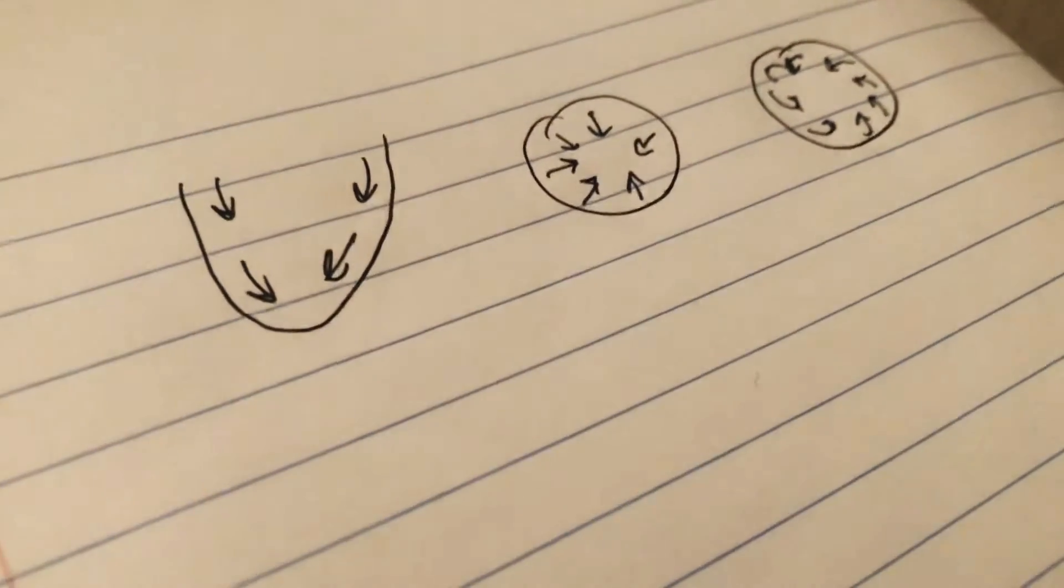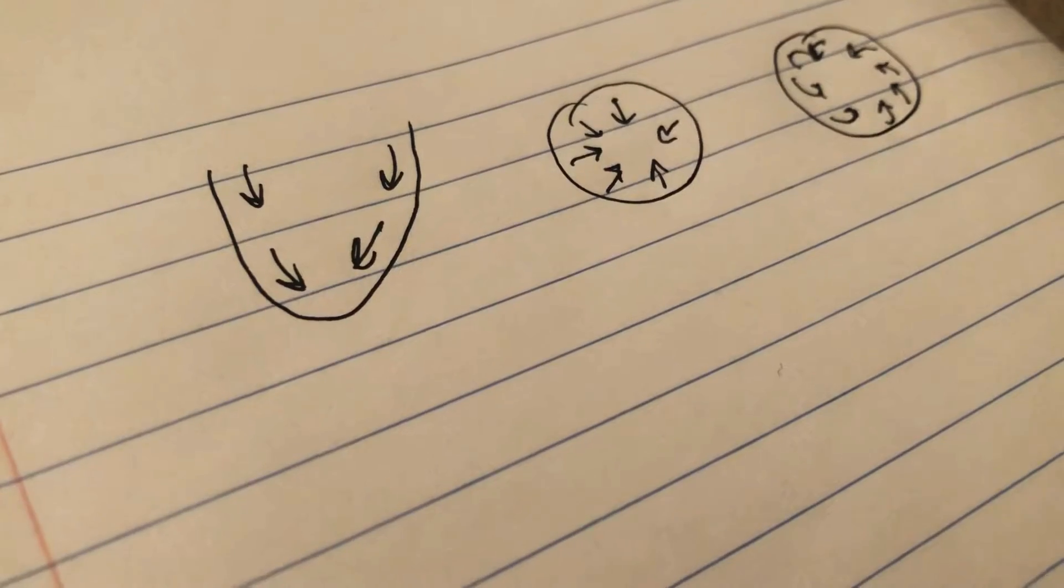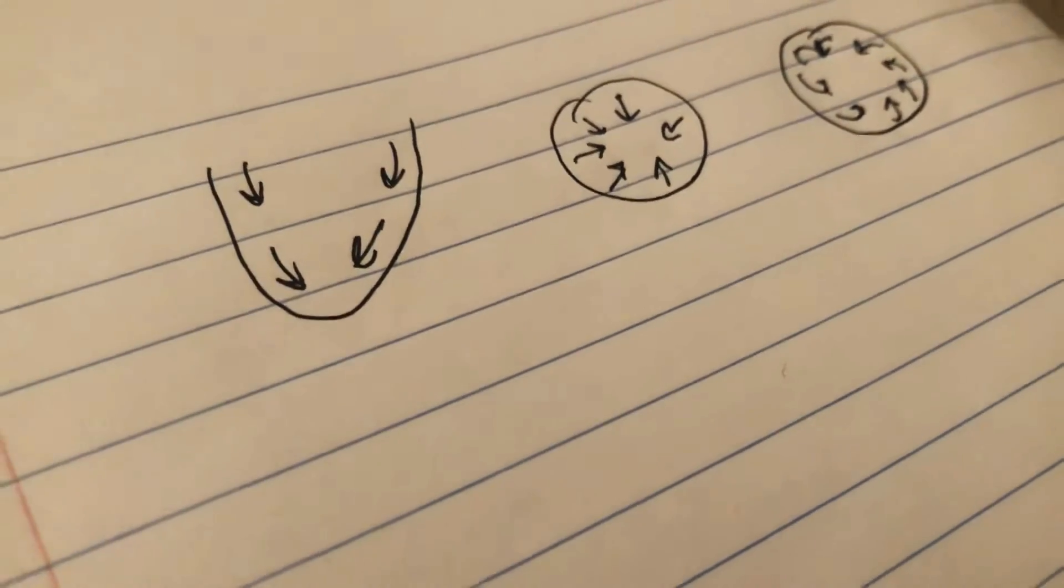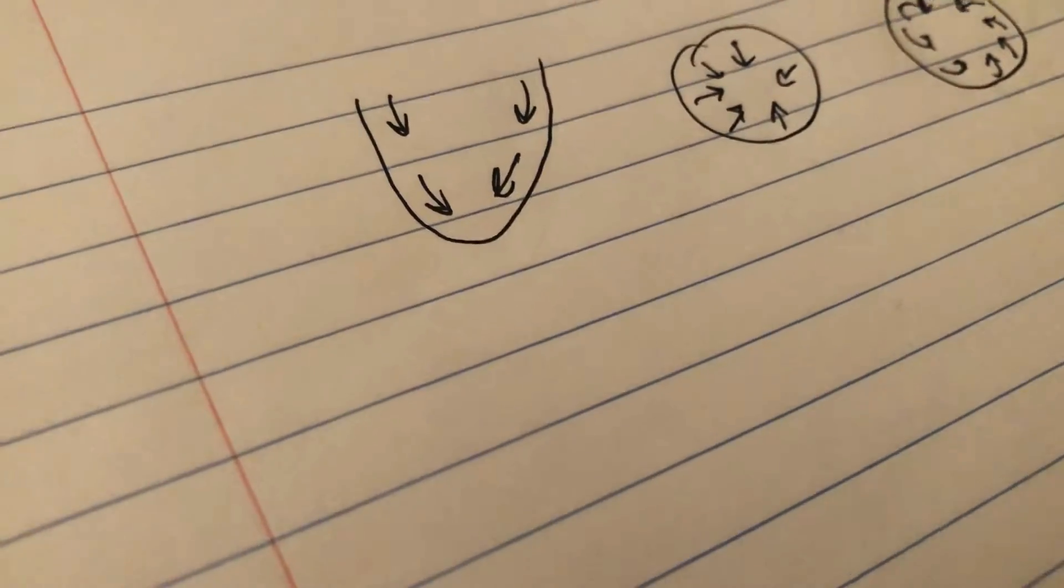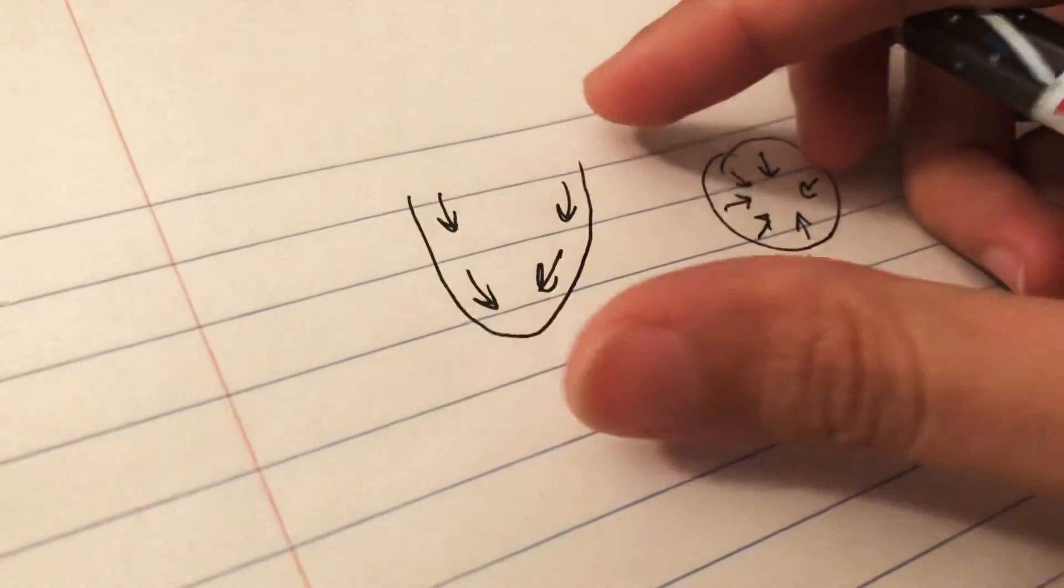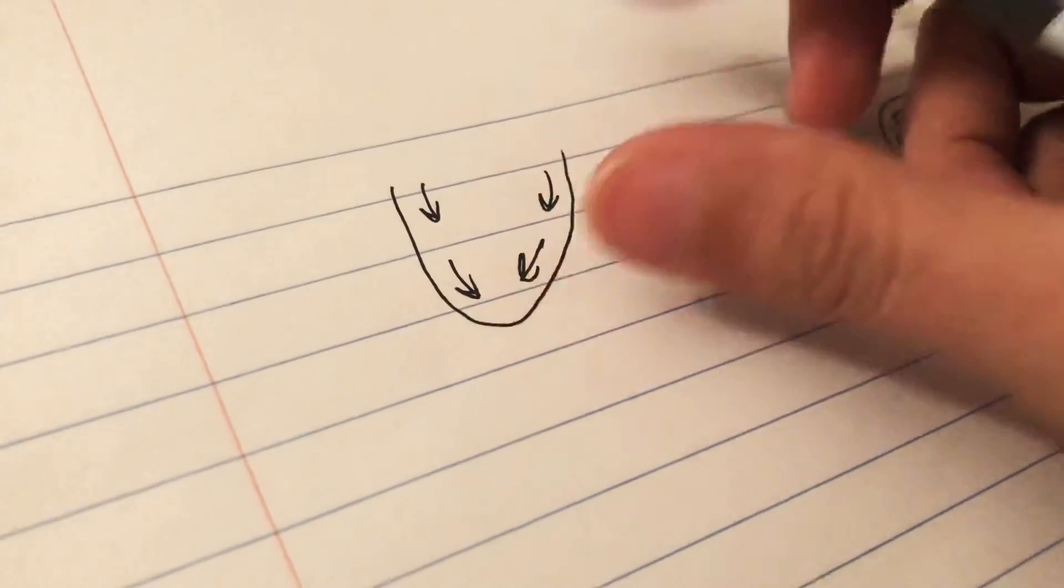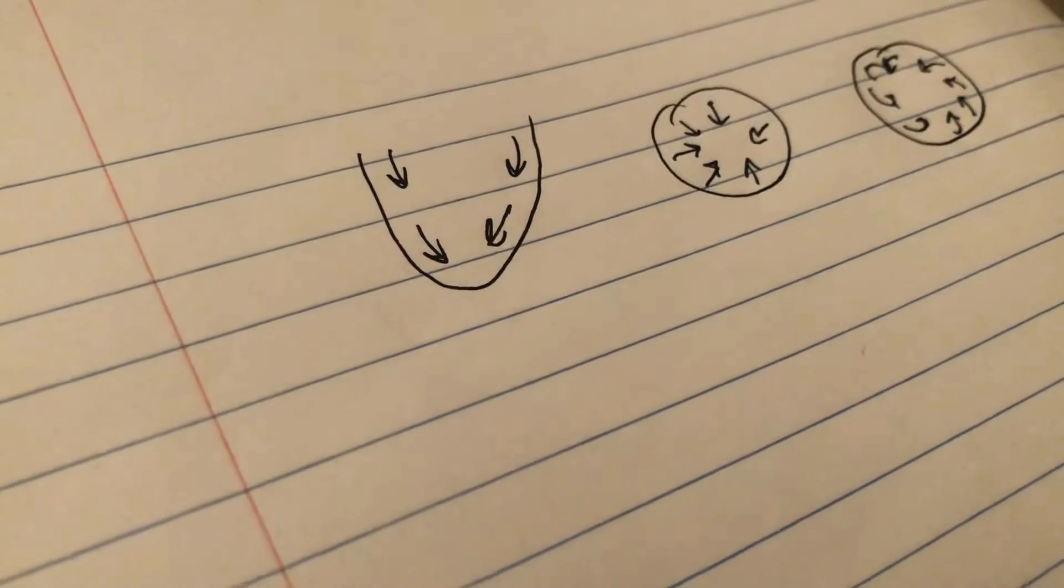For the LV systolic function, we look at the ejection fraction of the heart, but for the RV systolic function, we look at TAPSE. The way we measure TAPSE is actually a measure of the longitudinal shortening of the right ventricular fibers.